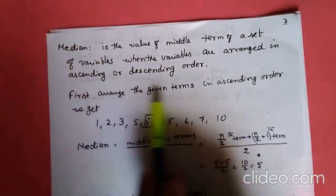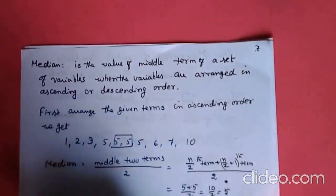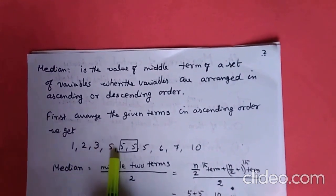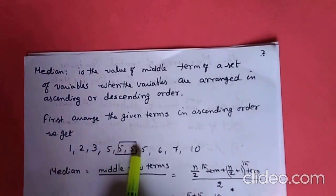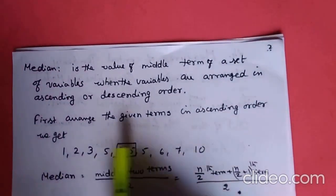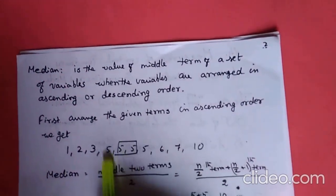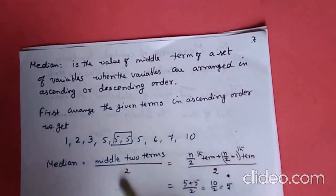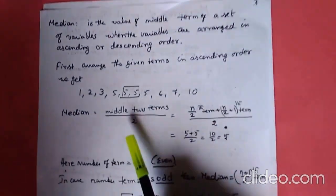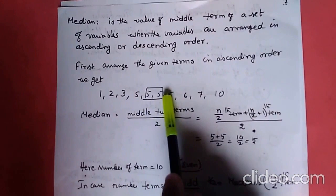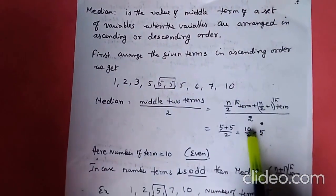First, arrange the given terms in ascending order. Taking the same example: 1, 2, 3, 5, 5, 5, 5, 6, 7, 10. Here there are 4 terms on each side, and the two middle terms are the two 5s. So adding these two and dividing by 2 gives the median: 5 plus 5 equals 10, divided by 2.